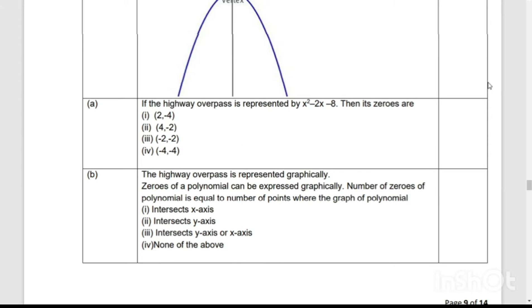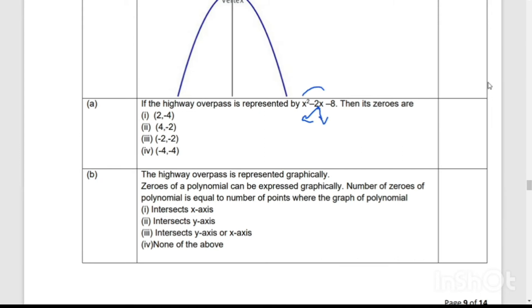First question: if the highway overpass is represented by x² - 2x - 8, then its zeros are. Okay, split the middle term. We have factors for 8. So x² - 4x + 2x - 8 = 0. So you can factorize, final answer we will get x = 4 and x = -2. So here we will get 4 and -2 as our answer.